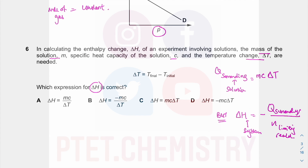There is a negative sign because of conservation of energy — whatever the system gives out is seen as a temperature increase in the surroundings, and whatever the system takes in is seen as a temperature drop. It is important to include the negative sign. To get enthalpy change in energy per mole, divide by the moles of limiting reactant. If you just want the heat energy in joules or kilojoules, use minus mcΔT without dividing by moles. Dividing by ΔT instead of moles would be incorrect.